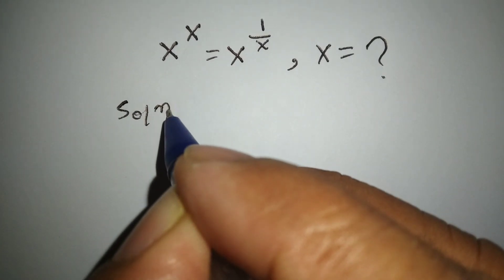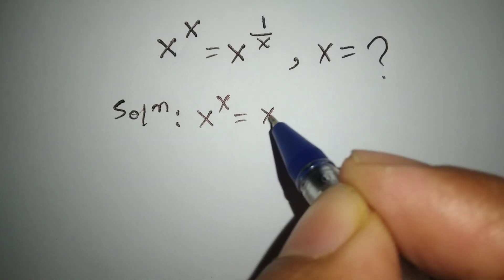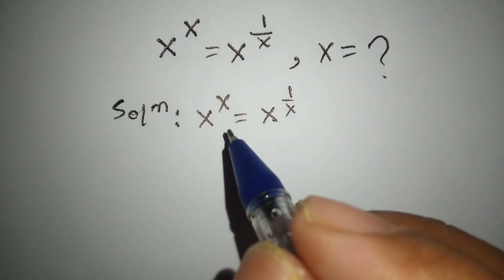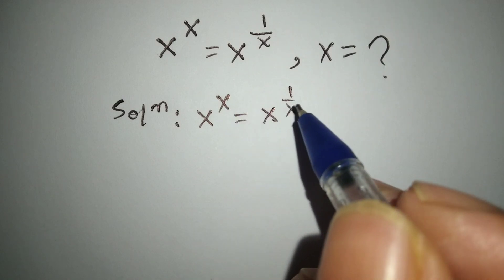Solution. x raised to x equals x raised to 1 over x. Here, both sides base are equal. So both sides are also equal.